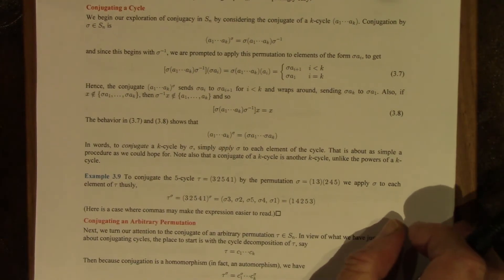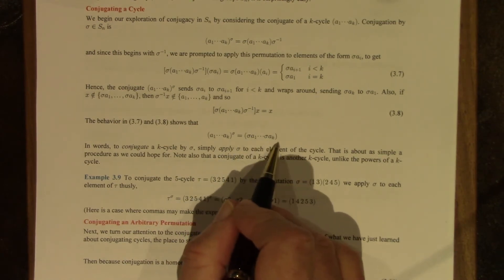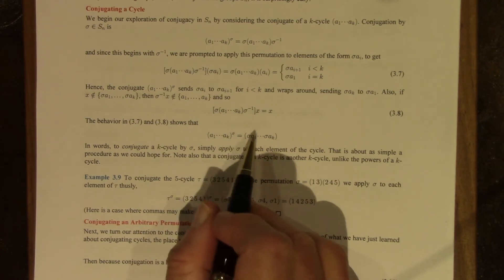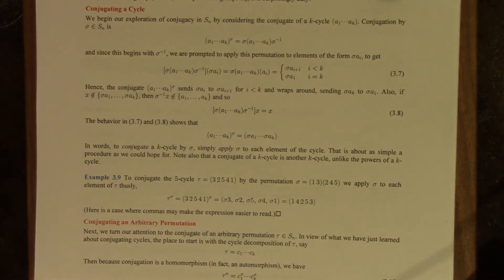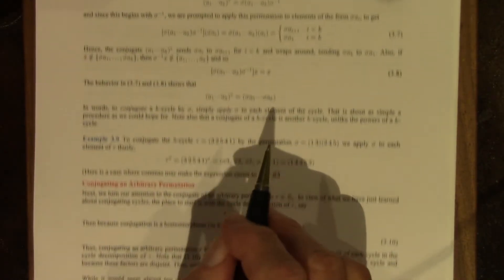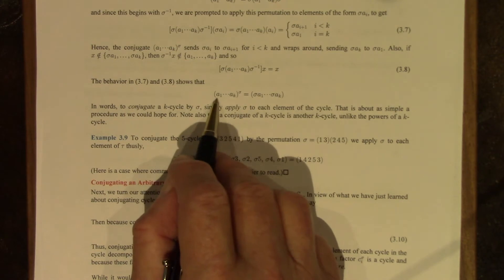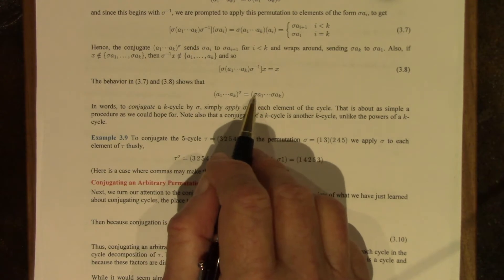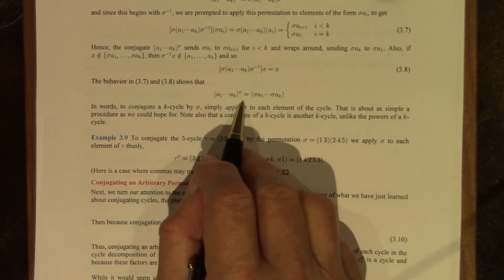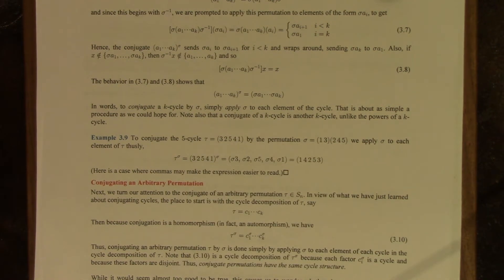And I have just described for you this cycle, sigma a 1 through sigma ak. The conjugate advances each of these to the next one with wraparound and leaves everything else fixed. So we have this formula, and in words, to conjugate a cycle by sigma, all you have to do is apply sigma to each element in the cycle. Nothing could be simpler than that. You don't have to mess with sigma inverse. It's all very straightforward.